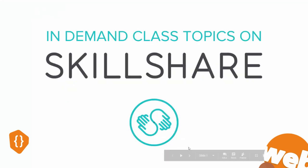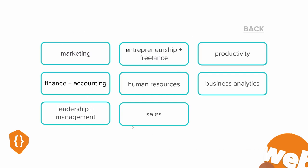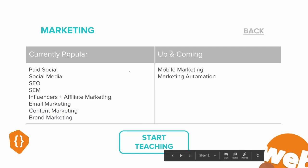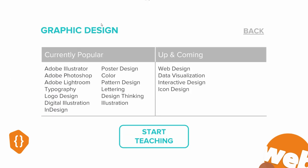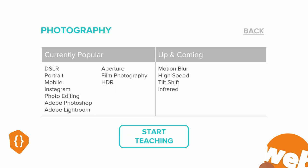Skillshare publishes a Google Doc showing in-demand class topics on the platform. For example, if your area of expertise is business, there are popular and up-and-coming subjects available. You'll want to think about where your area of expertise intersects these subjects. Skillshare goes wider than just business, and if your expertise falls within these subjects, you can create courses and expect that individuals will be able to find them.